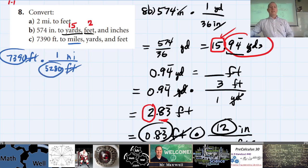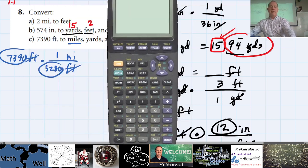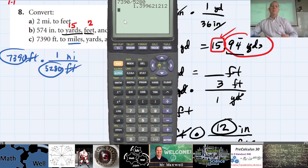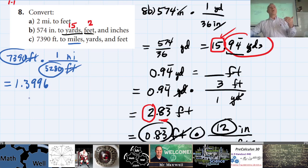Miles go on top and feet on the bottom, so the calculation is 7,390 divided by 5,280. That gives 1.3996 — write four or five decimal places while doing the question to be safe.